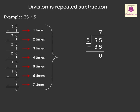Here, the number 35 is the dividend, the number to be divided. Number 5 is the divisor, the number that divides the dividend.